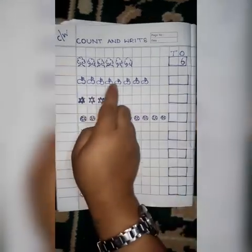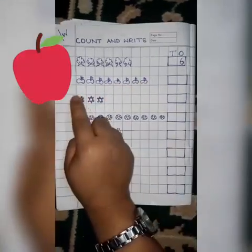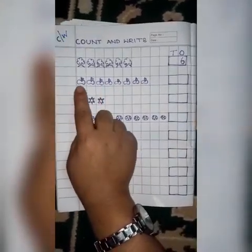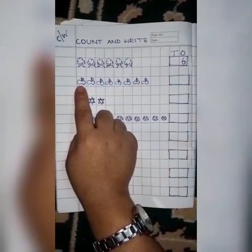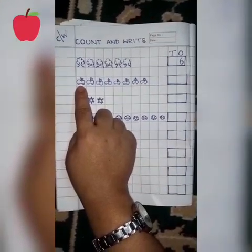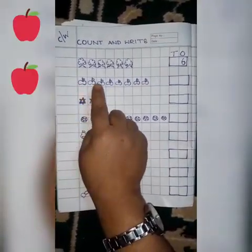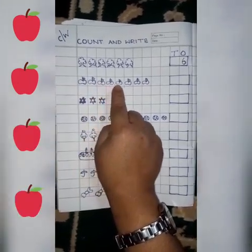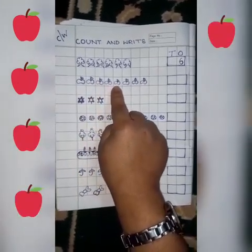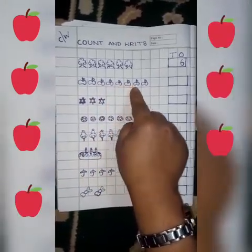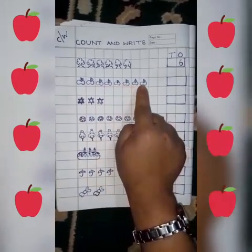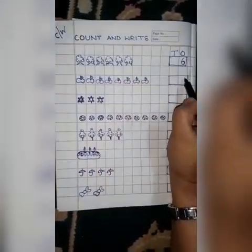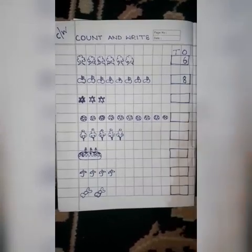And the next is apple. How many apples are here? Count it again. Say: 1, 2, 3, 4, 5, 6, 7, 8. How many apples? 8 apples.